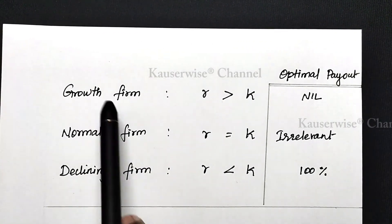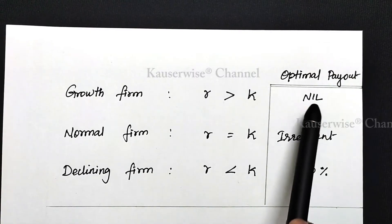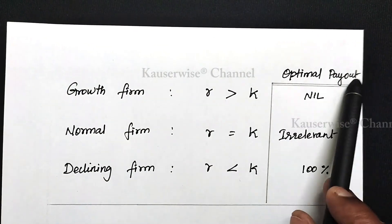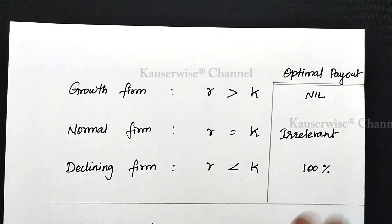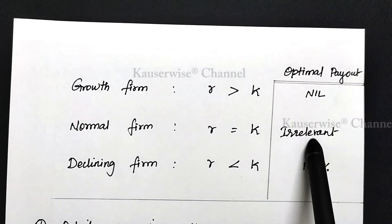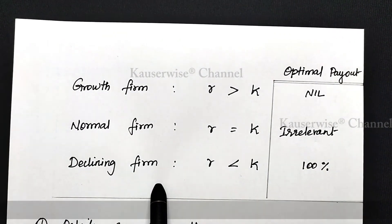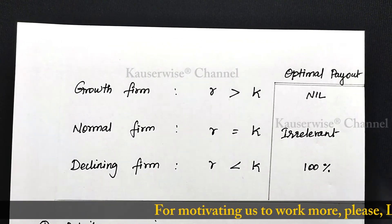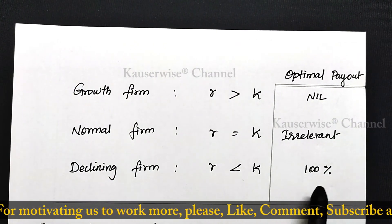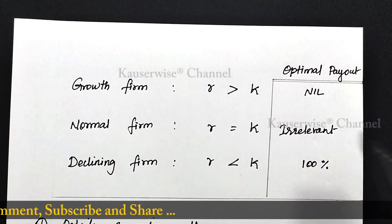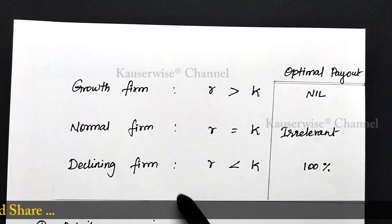Now let us see the optimum payout for each firm type. For a growth firm, the optimum payout is nil — that is, 0% payout is the optimum. For a normal firm, the optimum payout is irrelevant — whatever may be the proportion of payout, it is not going to affect the firm value of shares, so the decision of optimum payout is irrelevant. For a declining firm, the optimum payout is 100% — the company has to declare the entire profit as dividend. You should know how to find out the optimum payout for these three different types of firms.